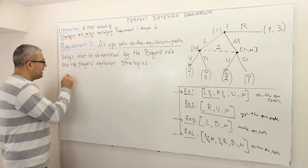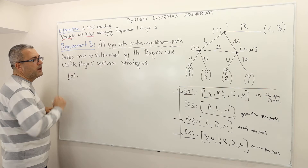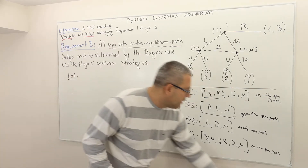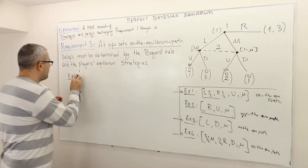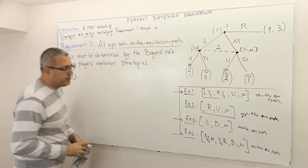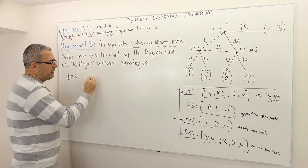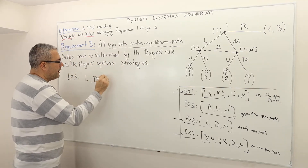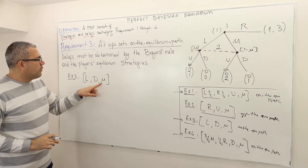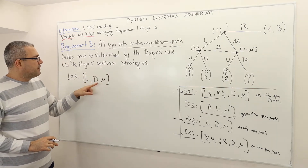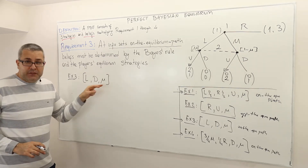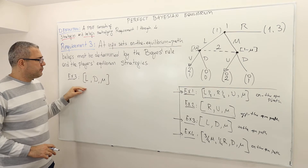Let's consider example three first because I think it's easier. Example three is a strategy profile LD mu. Here we wonder what the value of mu can be if this is an equilibrium strategy profile.